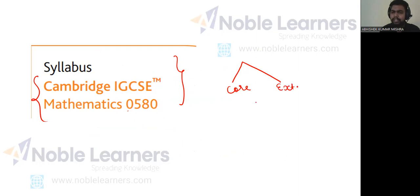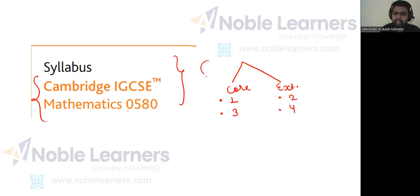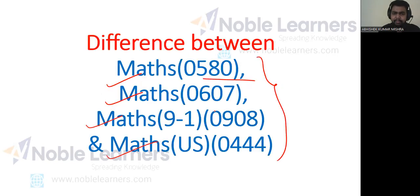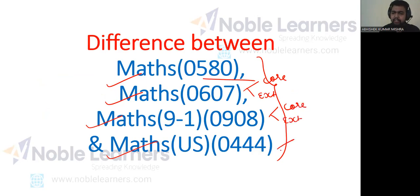What is the difference between Core and Extended? Core has two papers — Paper 1 and Paper 3 — which the student has to take, and Extended has two papers — Paper 2 and Paper 4. This analogy is the same for all the Mathematics courses offered by IGCSE. In Mathematics International, you will also have a Core paper and an Extended paper, and the same applies across all courses.